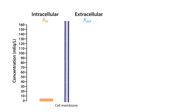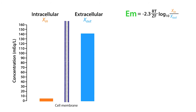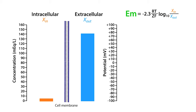The orange bar represents the intracellular concentration of ion X, while the blue bar represents the extracellular concentration of ion X. In the upper right-hand corner, we have the Nernst equation, where the equilibrium potential is shown in green and expressed in millivolts. The intracellular ion concentration is shown in orange, while the extracellular ion concentration is shown in blue.